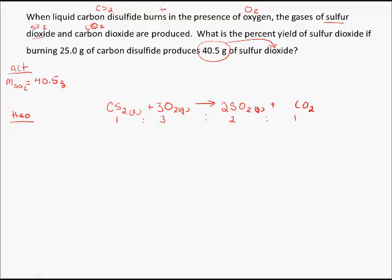At this point, what I'm going to do is use the amount of material I'm told that is consumed along with the balanced equation to predict the amount of sulfur dioxide that could be produced. I begin by looking at what I'm given. And what I'm given is a mass of CS2 that's consumed. In this case, it's 25 grams.